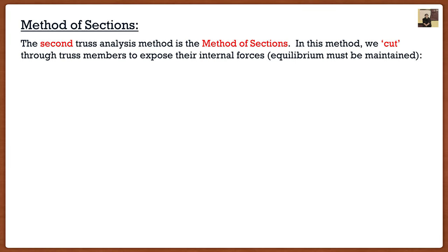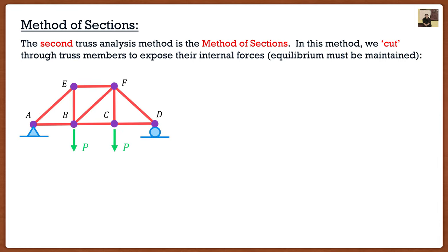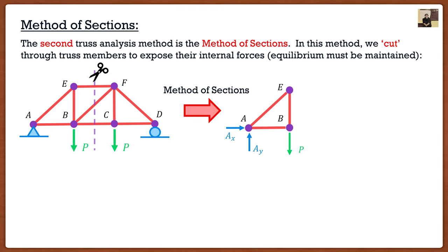This is nothing new — we've done this before. Remember that every time we cut through a member we have to replace it with its internal forces. So let's say I have this truss and I'm very interested in member BF. Instead of doing the method of joints where I have to go from joint A to joint B, I can take my scissors and cut through the truss — snip snip through all the members — and this creates a free body diagram. At point A we have a pin so I replace it with AX and AY, we have our external load P, and since I cut through this truss at three locations — one, two, three — I have to replace each one of those with forces.